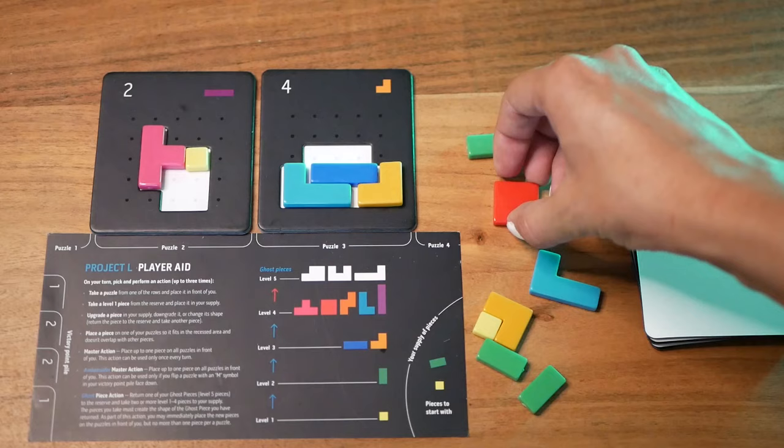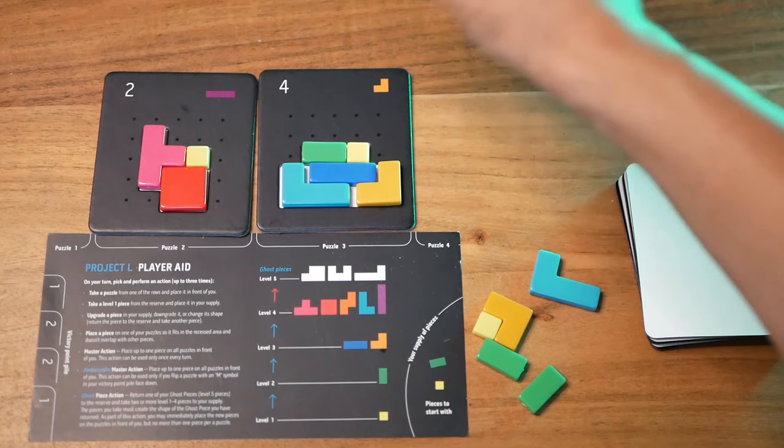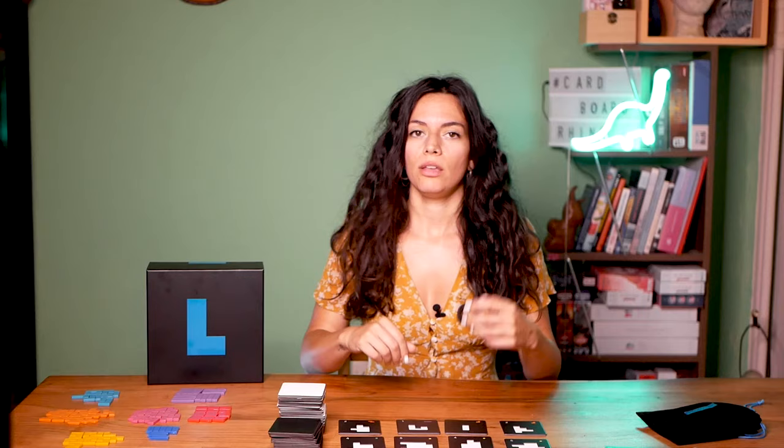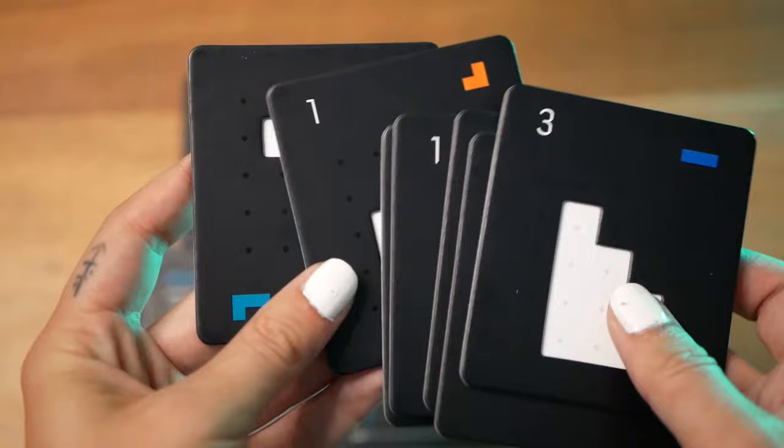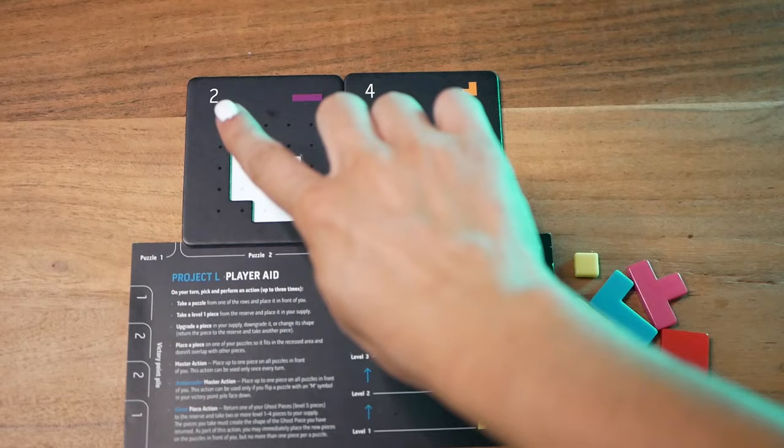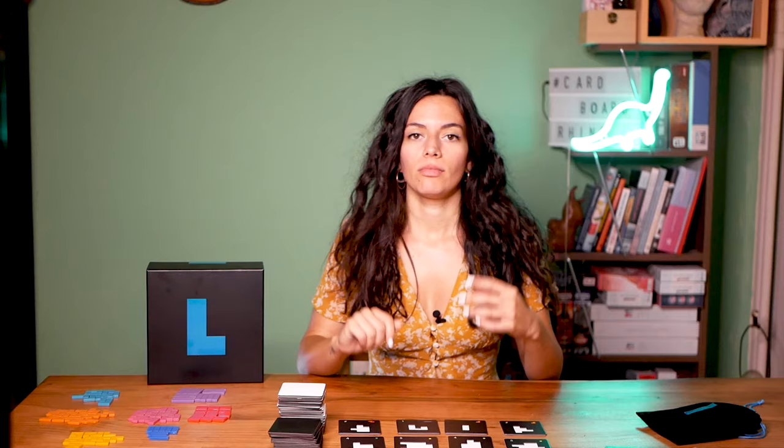Each player may now only take a maximum of one black puzzle during their turn. After the final round ends, each player may place any number of pieces from their supply into their open puzzles. This is called finishing touches. For each piece placed this way, you deduct one point from that player's final score. And then players count up their points, which are the total of the points on all the puzzles in their victory point pile, minus the points for each incomplete puzzle, and minus the one point for every piece they place during finishing touches. And the player with the most points wins.